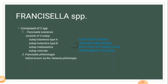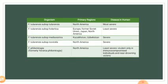Francisella philomiragia was previously known as Yersinia philomiragia. The four subspecies of F. tularensis differ in their associated geographic regions. Here is a table summarizing the subspecies: subspecies tularensis is primarily from North America, subspecies holarctica from Europe, the Soviet Union, Japan, and North America, while subspecies mediasiatica is from Kazakhstan and Uzbekistan.